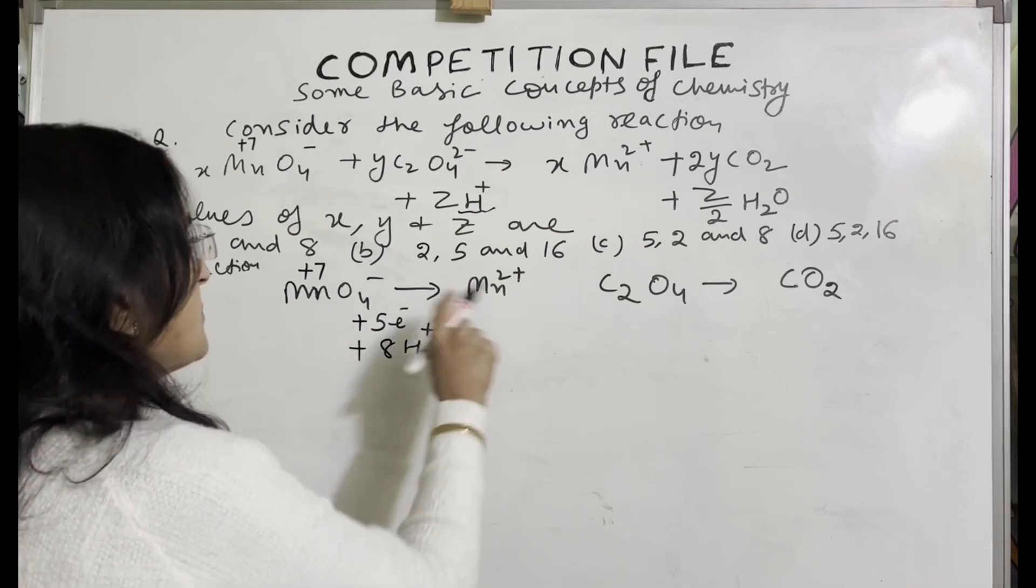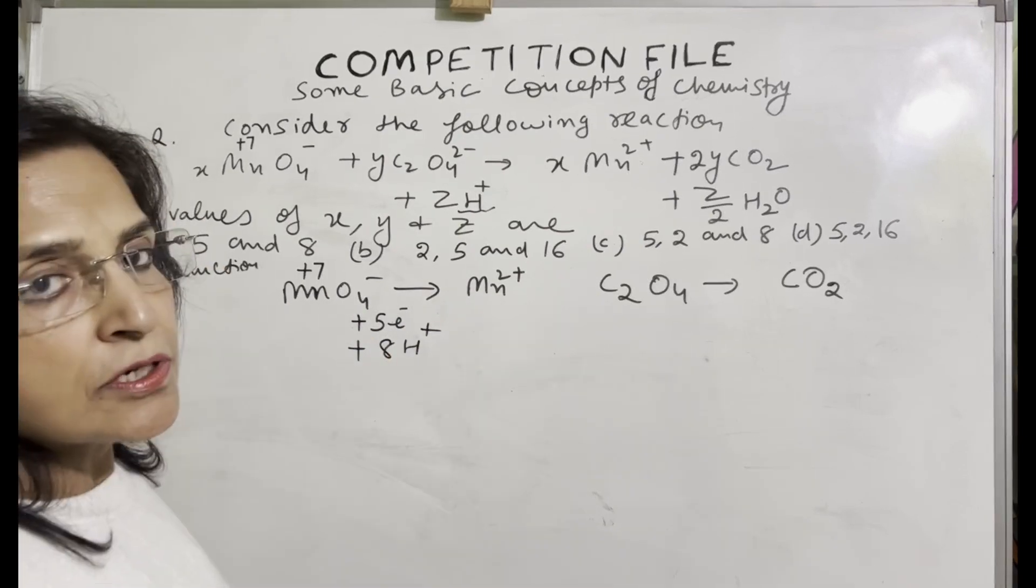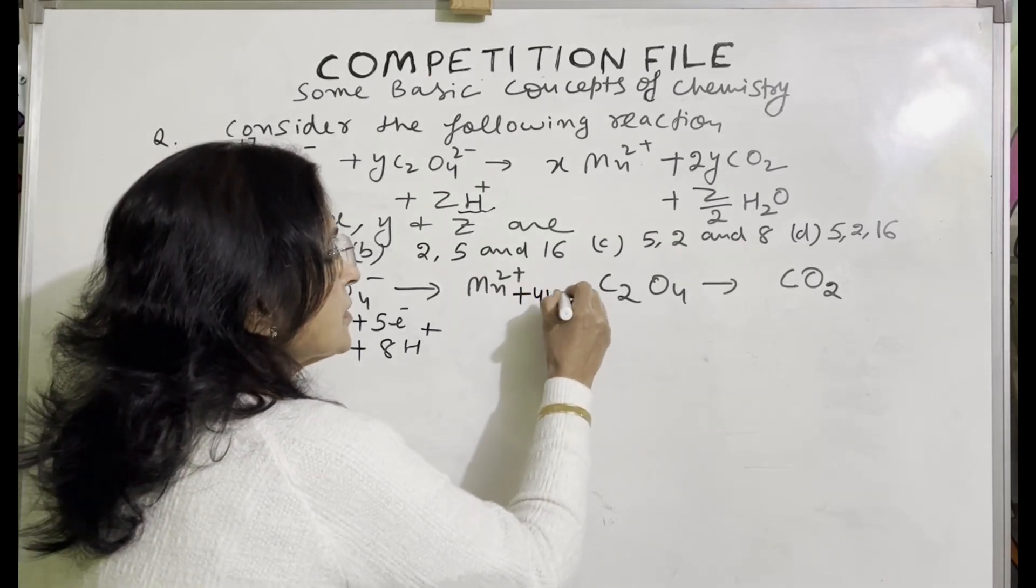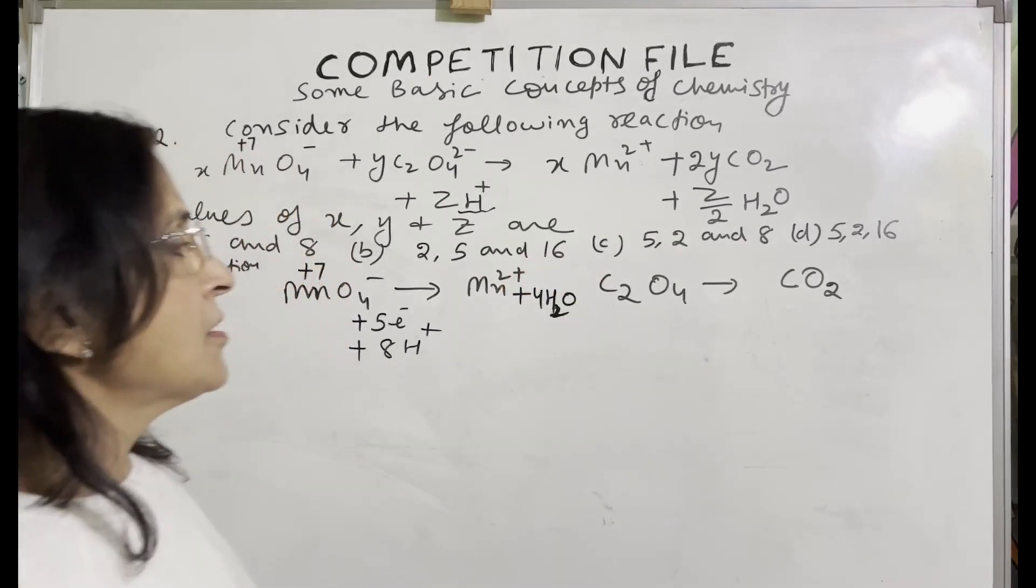Now manganese is balanced, but oxygen and hydrogen are not balanced. To balance oxygen and hydrogen, we will add water on this side. This equation is balanced.